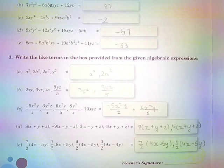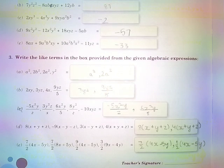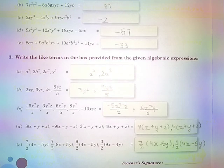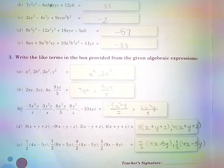Part E: 7/2(4x−5y), 7/2(8x+5y), 9/2(4x−5y), 3/2(9x−4y) — the like terms are 7/2(4x−5y) and 9/2(4x−5y).